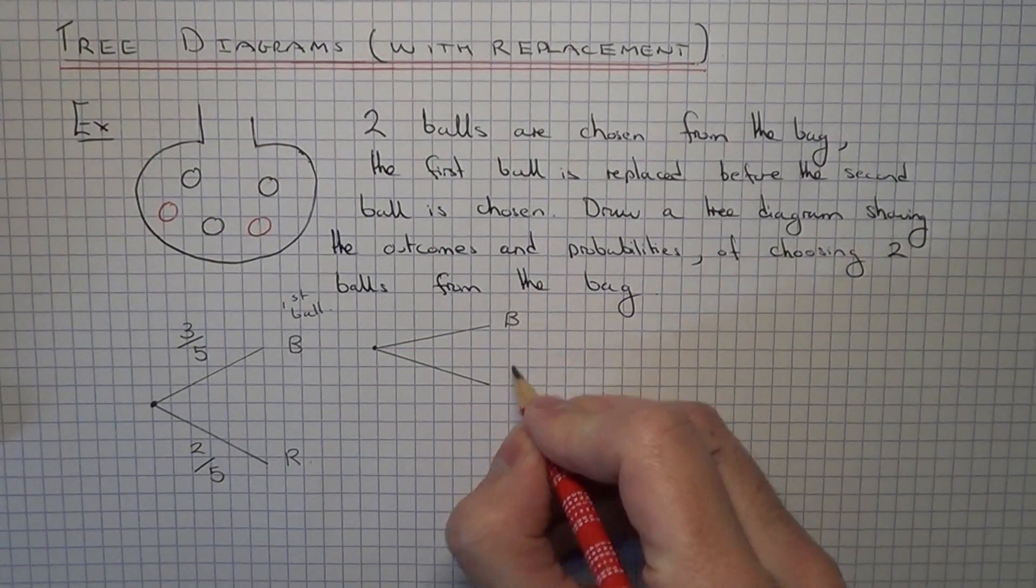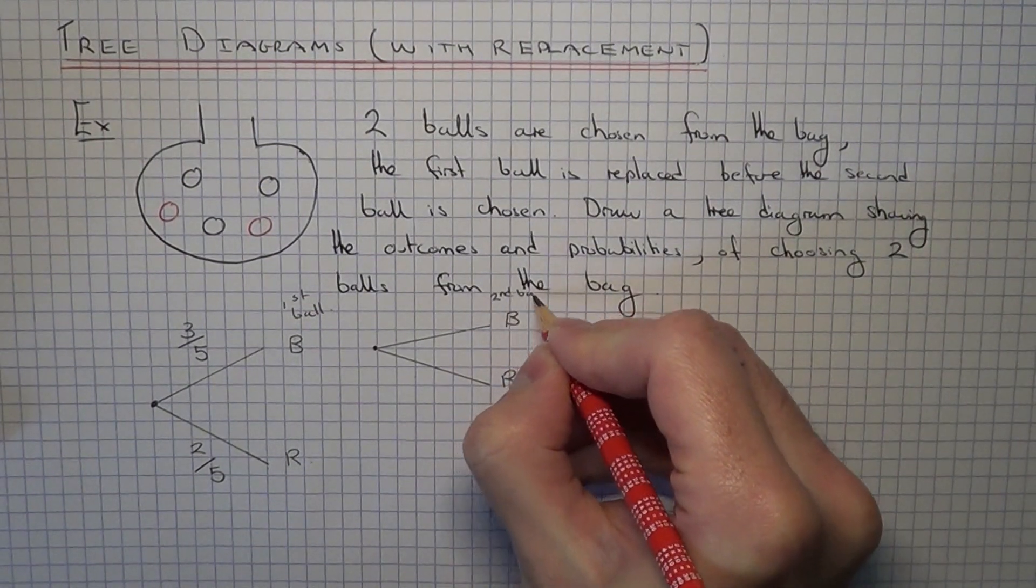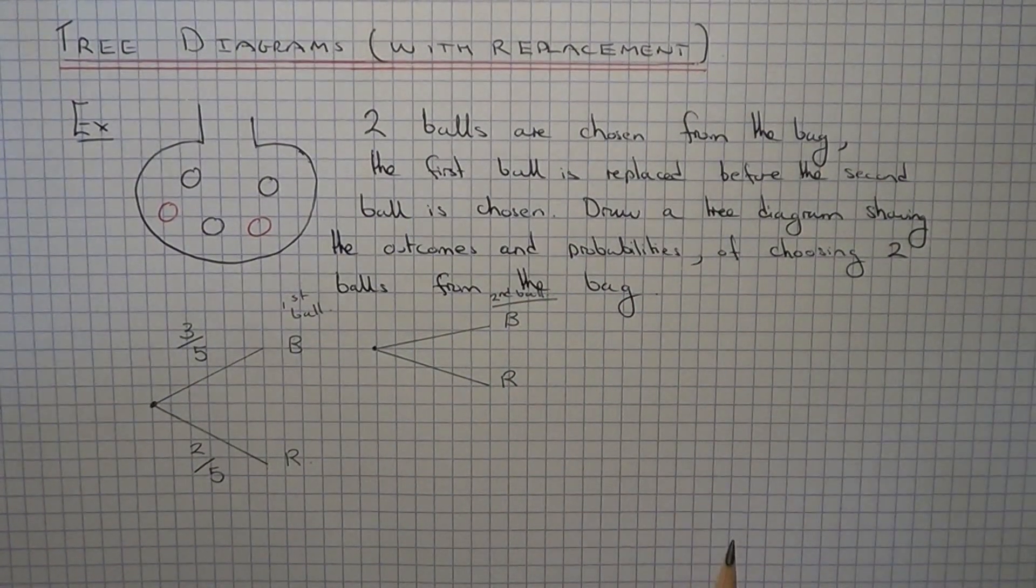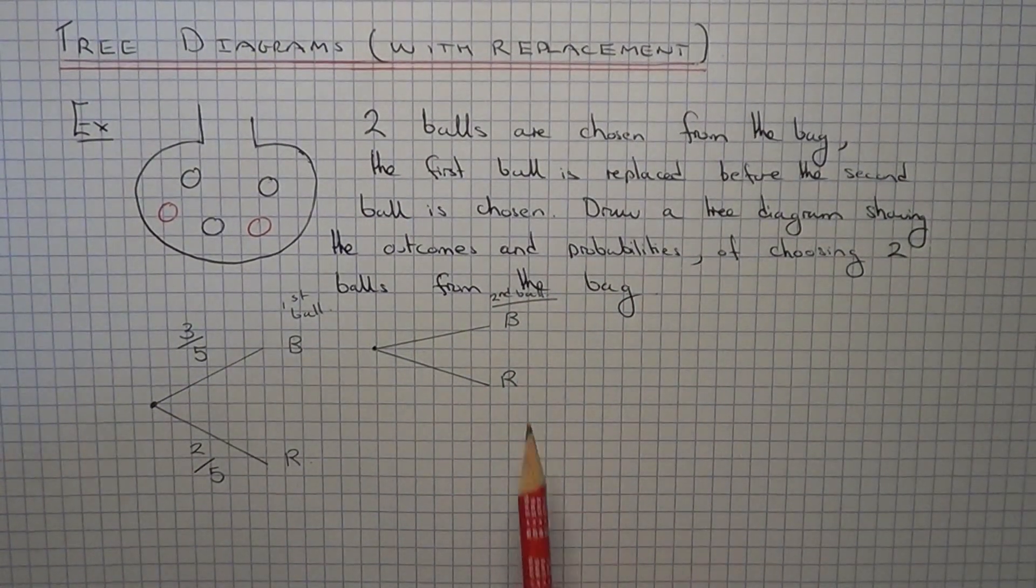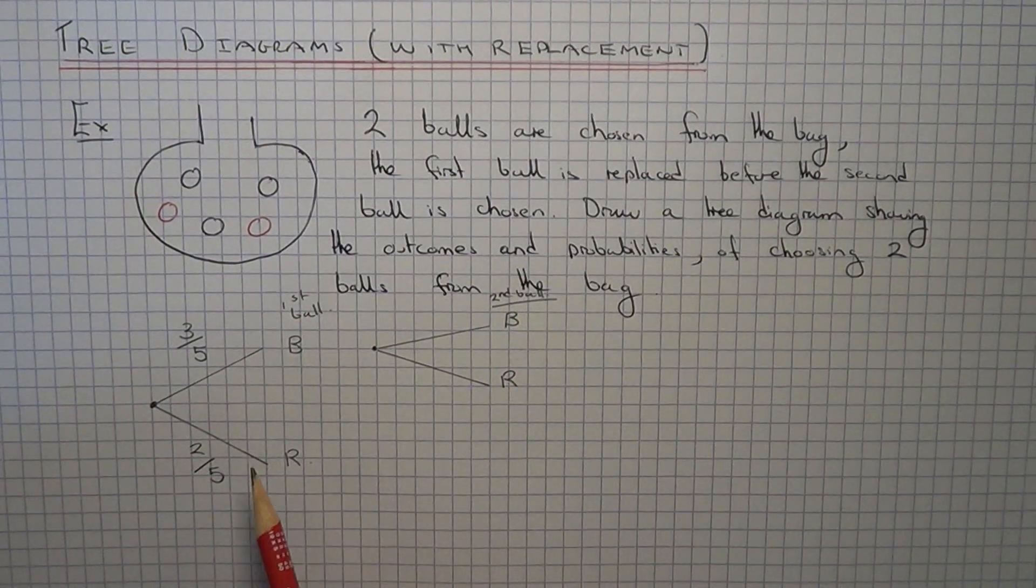On our second ball, we can pick out a black or a red ball. Remember that I have put the first ball back into the bag now. So when I work out the probability of the second ball, it is not depending on what we picked out previously.